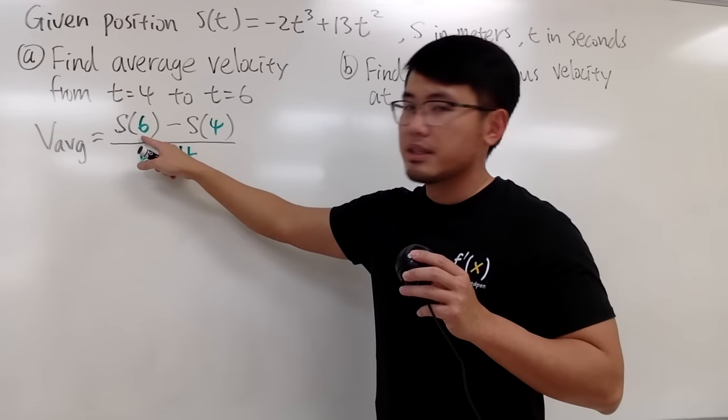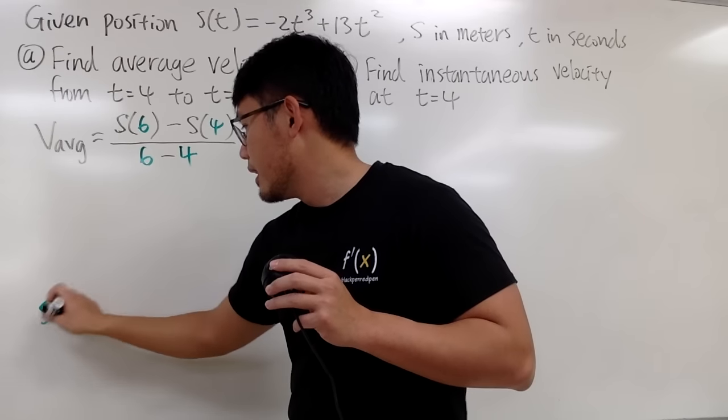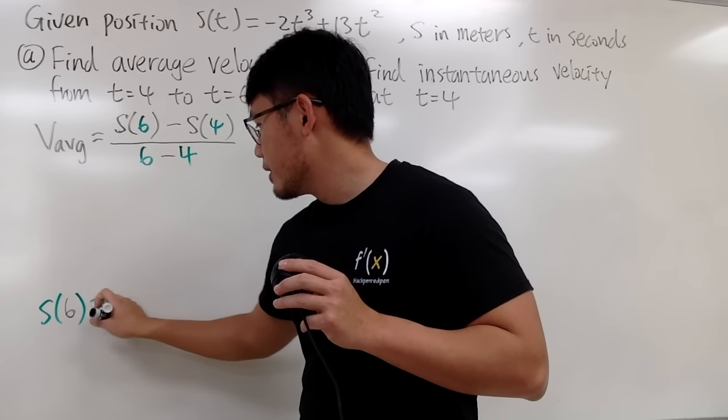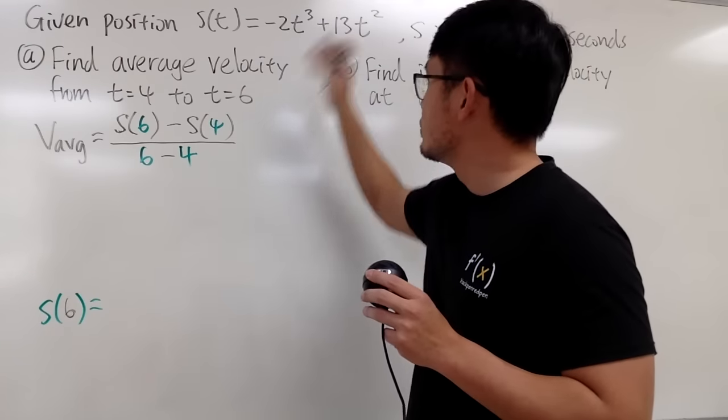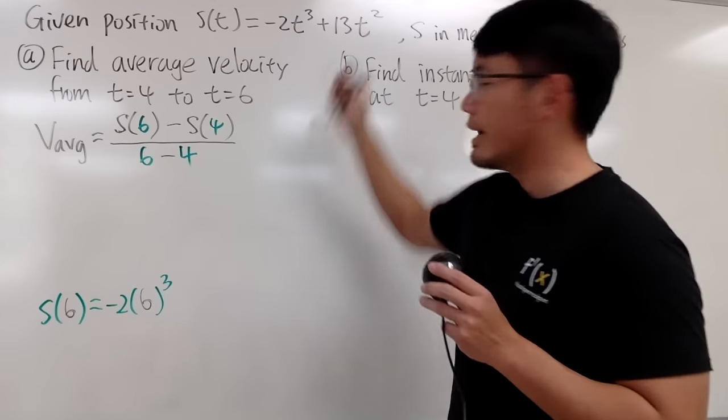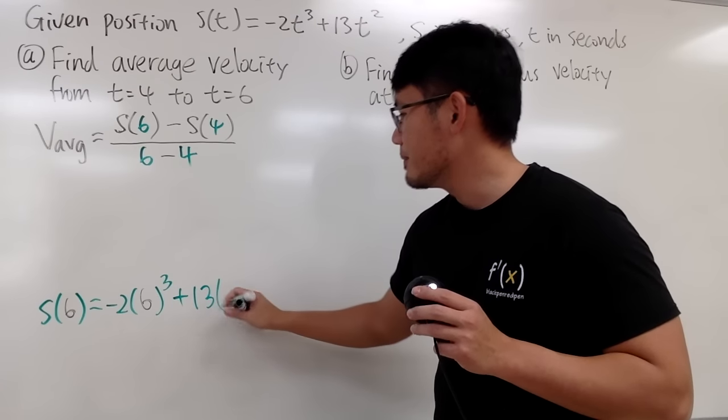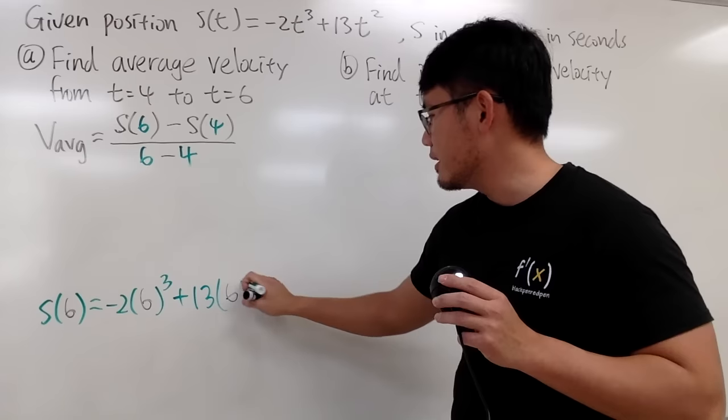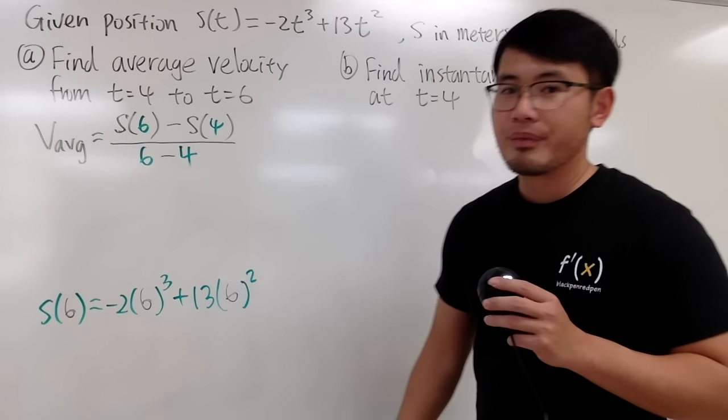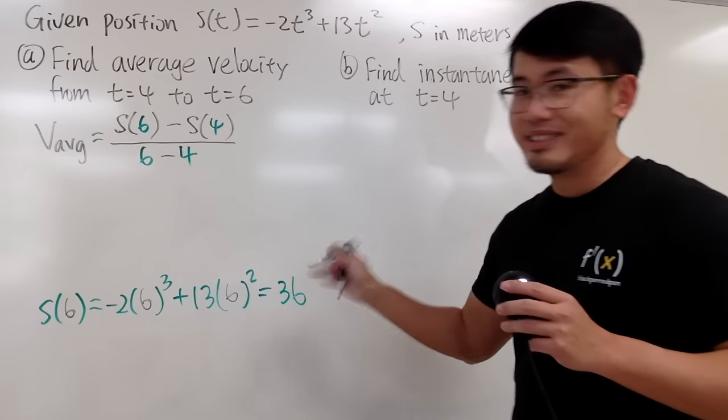Well, to get S of 6, you refer back to this equation. S of 6, this is equal to, you put 6 into the t's, you get negative 2 times 6 to the third power, and we add 13t squared. So that's plus 13 times 6 squared. Of course, right here, you can just work this out, I'll leave that to you, you end up with 36.